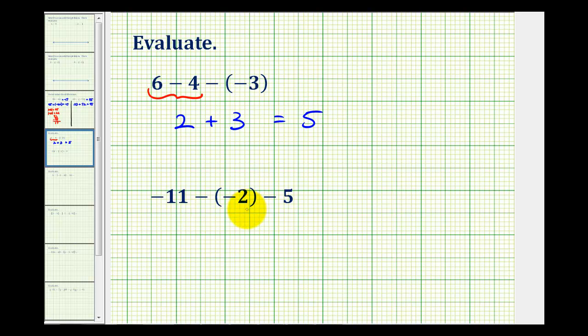For the second example, we'll write this as negative eleven, and then minus negative two is equivalent to plus positive two, and then minus positive five is equivalent to plus negative five.